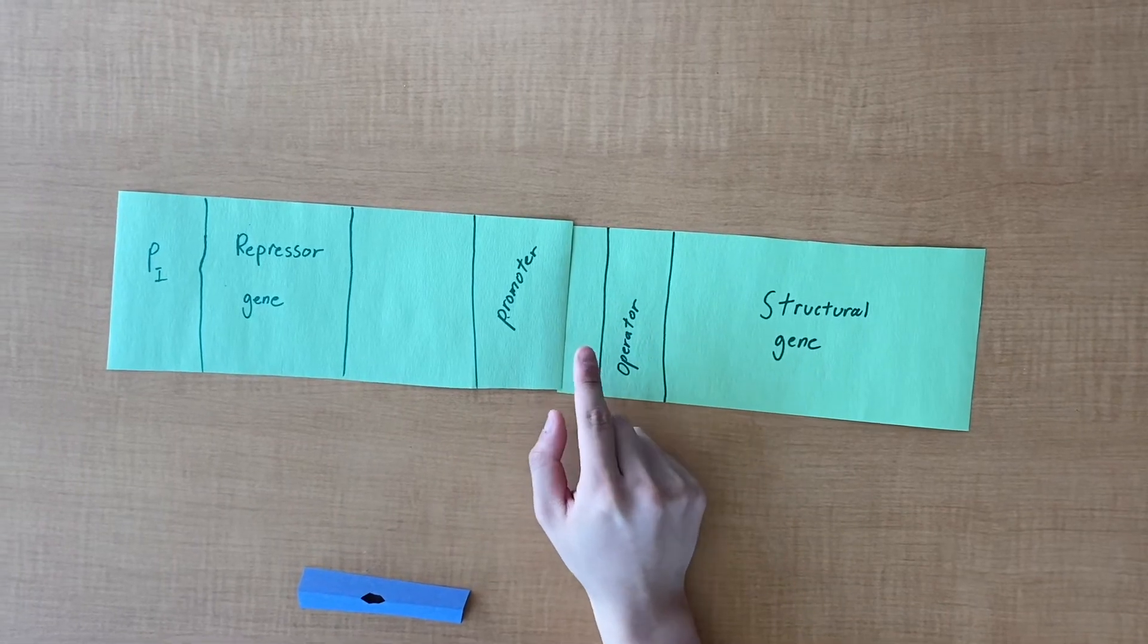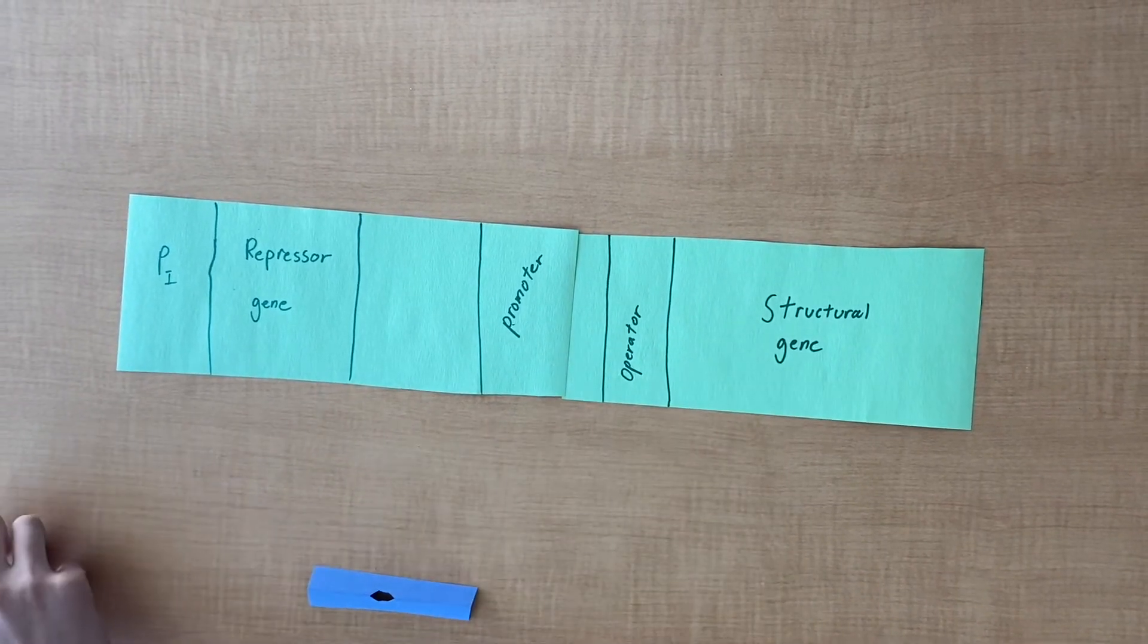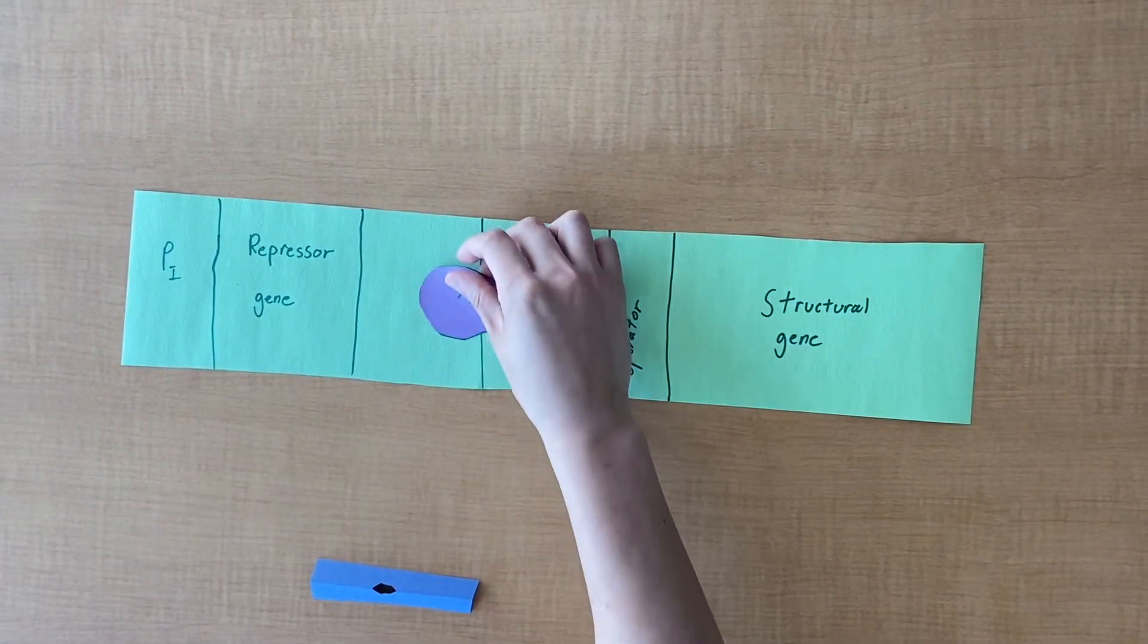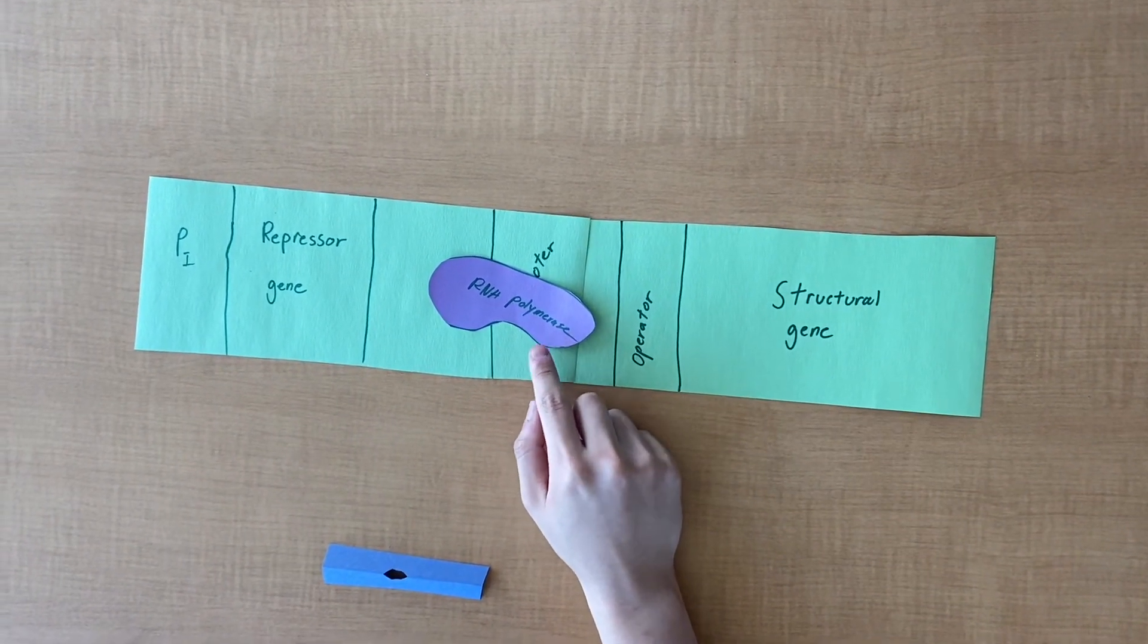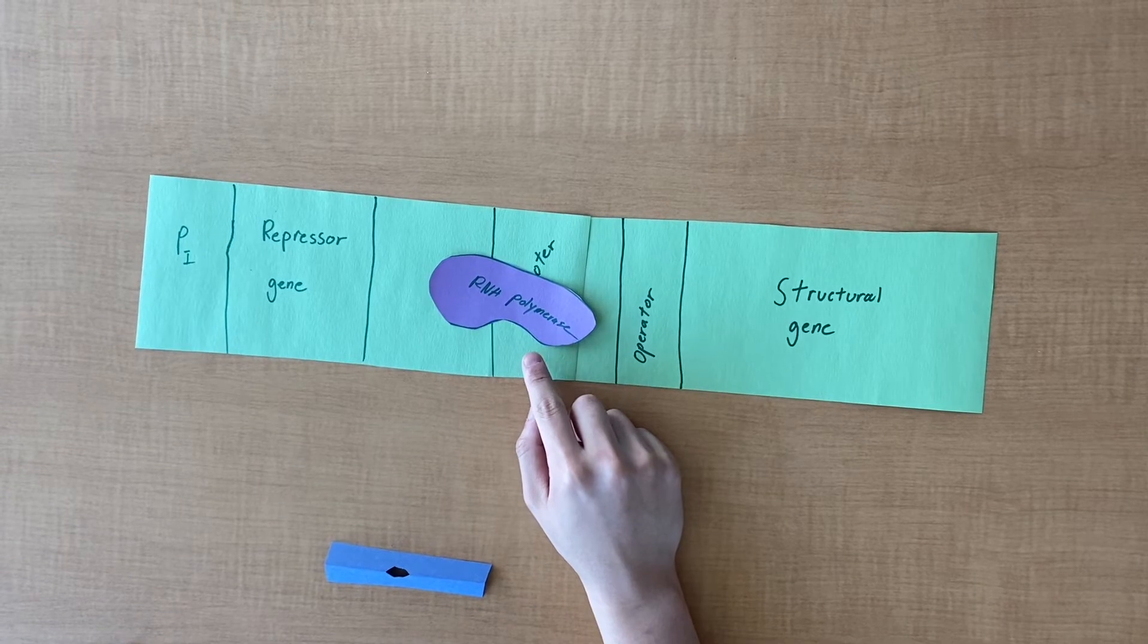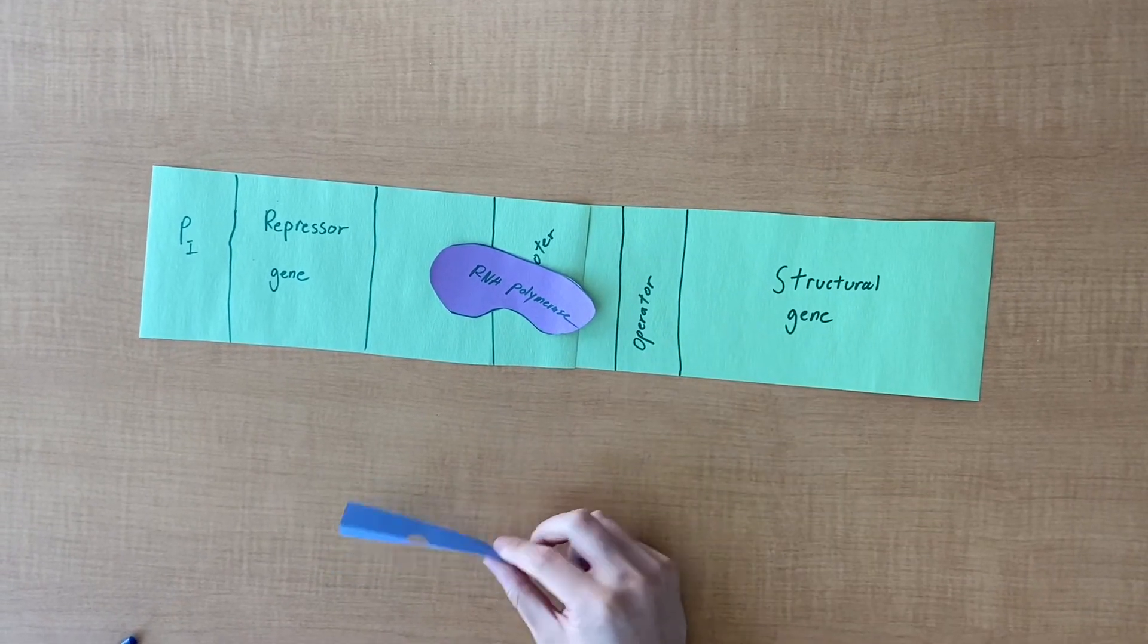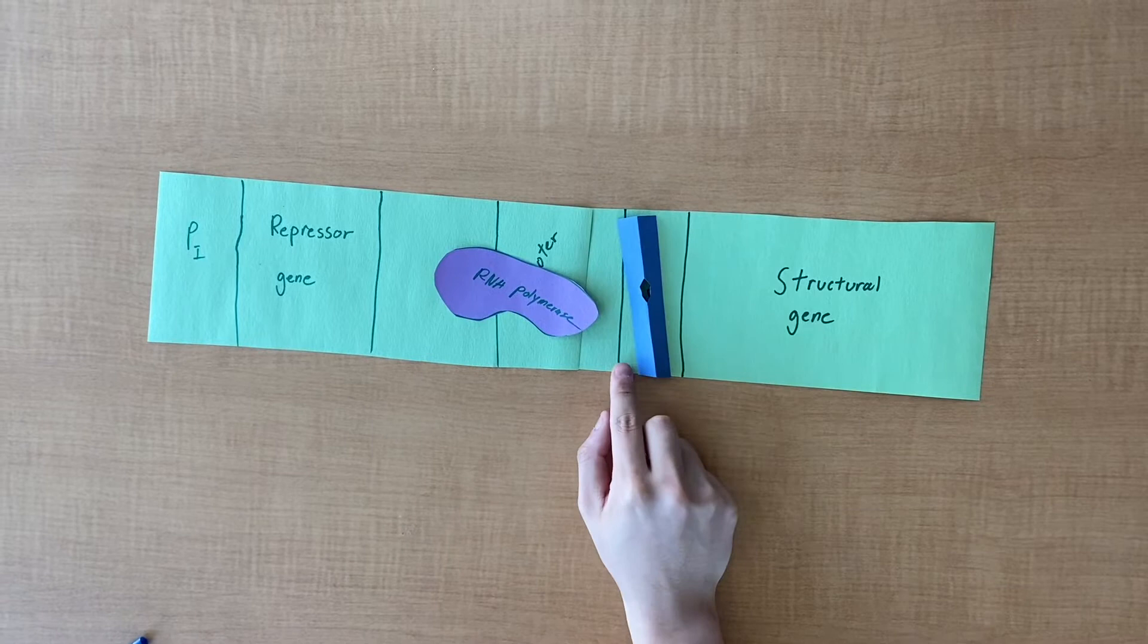The next element is the promoter region. This is where RNA polymerase binds to start transcription. RNA polymerase transcribes mRNA from DNA. The operator region is where the repressor protein binds to.